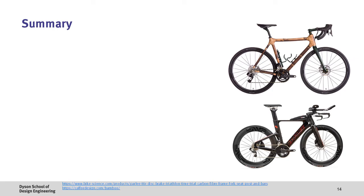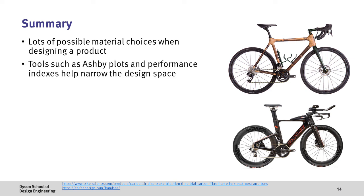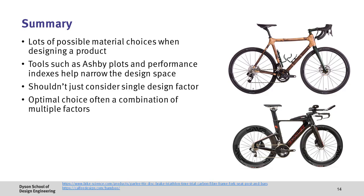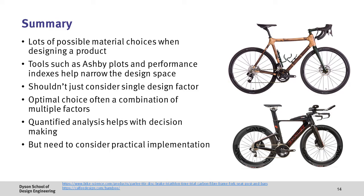So to summarize there are a lot of possible material choices when designing a product. Tools such as the Ashby plot and performance indices can help to narrow the design space. But we shouldn't just consider a single design factor and optimal choice is often a combination of multiple factors. Quantified analysis does help with decision making but we need to consider the practical implementation of our designs with key factors such as manufacturability.